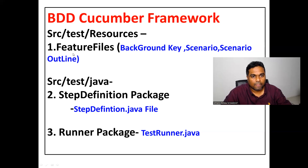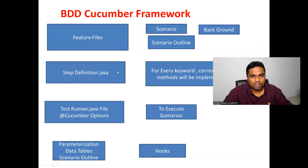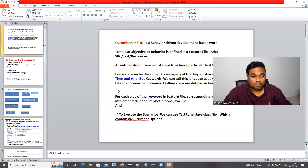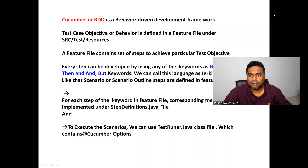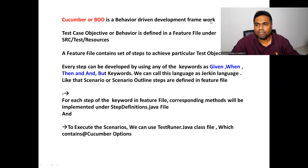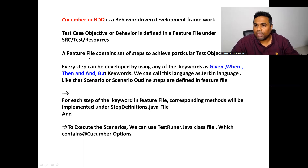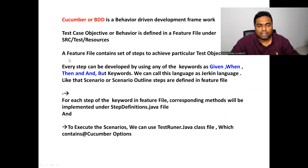Let's discuss feature files. Cucumber, or BDD, is a Behavior Driven Development framework. The test case objective or behavior is defined in a feature file under src/test/resources. A feature file contains a set of steps to achieve a particular test objective. Inside a feature file, we can write a Background section, Scenario, and Scenario Outline.